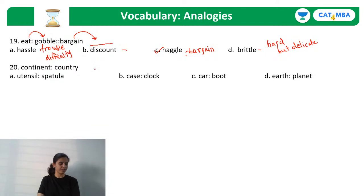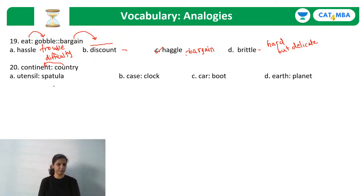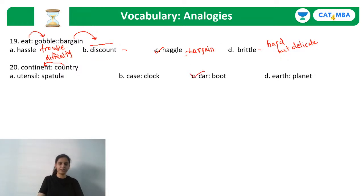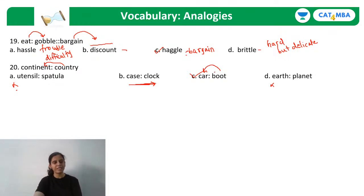Question 20: Continent : Country. A country is a part of a continent — this is a whole-to-part relationship. Options: 'Boot and Car' — the boot is part of a car, correct relationship; 'Clock and Case' — the case is the outer part of a clock, but the sequence is reversed; 'Utensil and Spatula' — a spatula is a utensil, reversed; 'Earth and Planet' — Earth is a planet, reversed. Checking the sequence: we need whole first then part. 'Car and Boot' matches — car is the whole, boot is the part. The correct answer is C: Car : Boot.